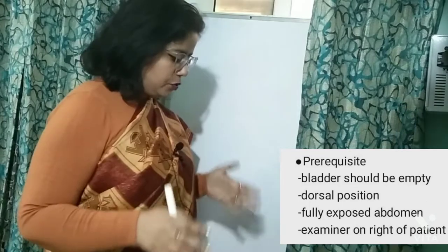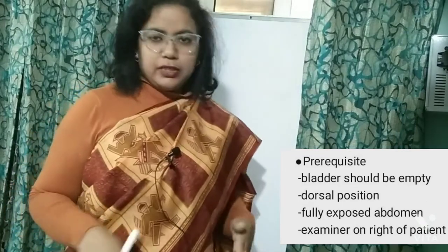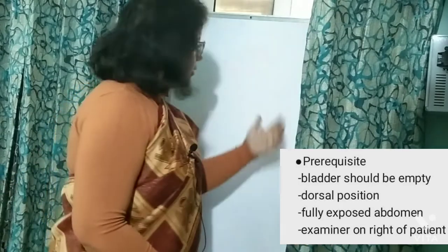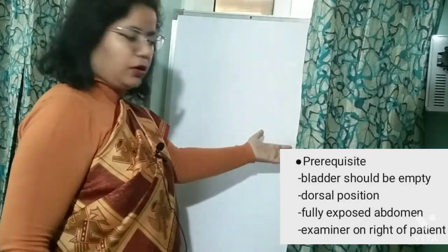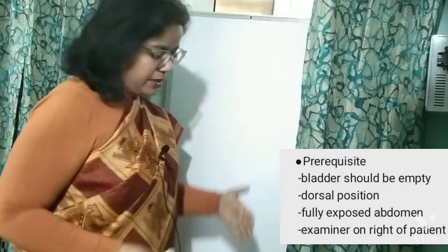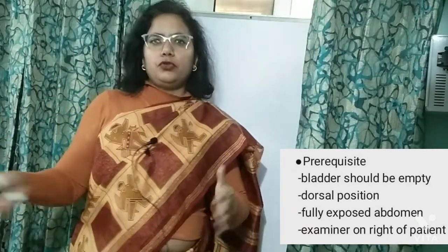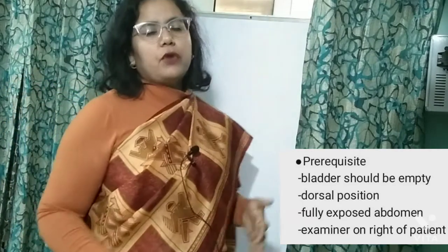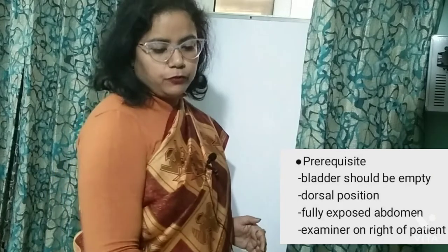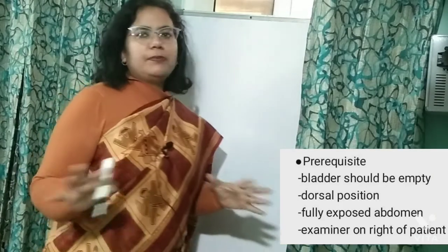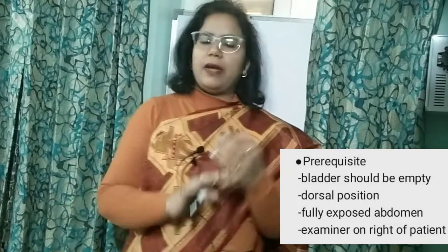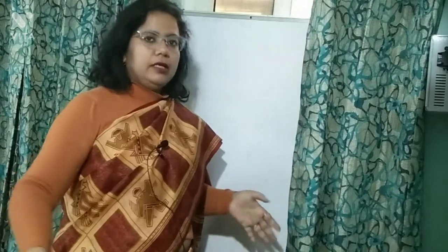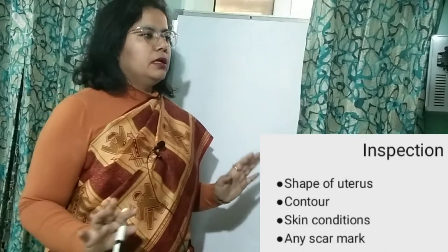When you are examining, you have to stand on the right-hand side of the woman. If her head is on this side and her feet on the other side, her right hand is here — so you will be standing there and doing this examination from her right-hand side. Once you have done all the prerequisites — asked her to empty her bladder, asked her to lie comfortably with thighs slightly flexed and abdomen fully exposed — you proceed.